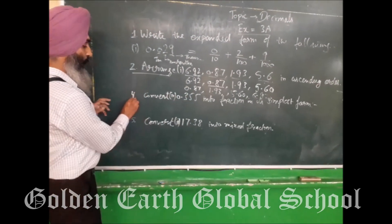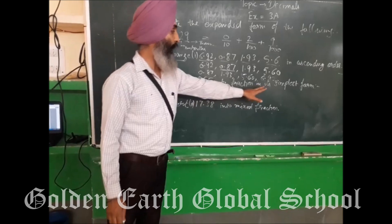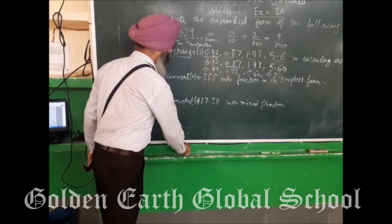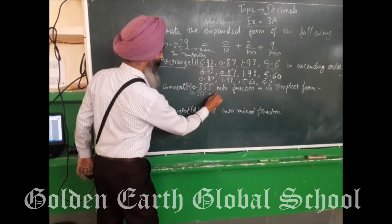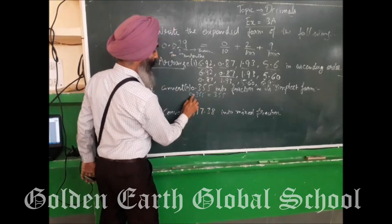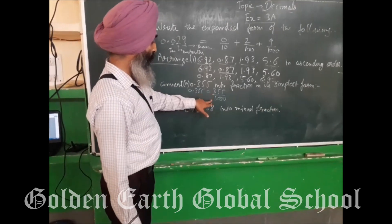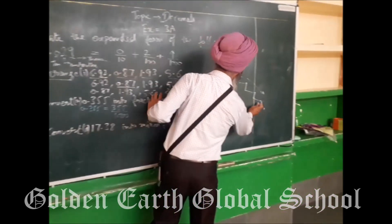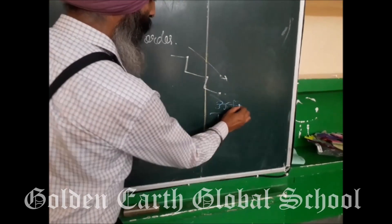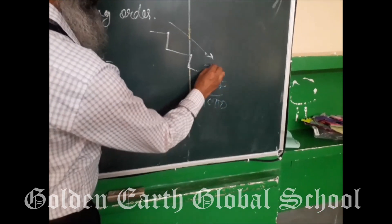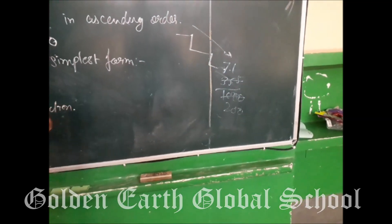The fourth question is: convert 0.355 into a fraction in its simplest form. First of all, write down the question again and remove the decimal. When you remove the decimal, you have 1000 in the denominator. So you will do the rough cutting in your rough space. This is 355 divided by 1000. Cutting here, it goes on the table of 5: 5 × 71 is 355 and 5 × 200 is 1000. So your answer is 71 upon 200.